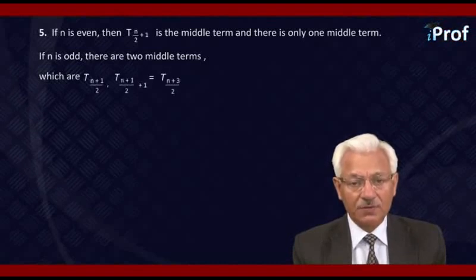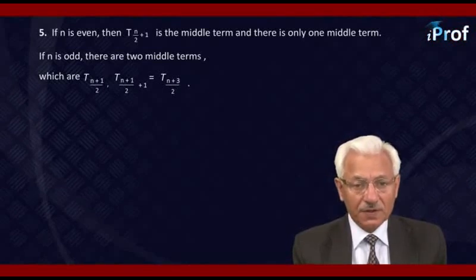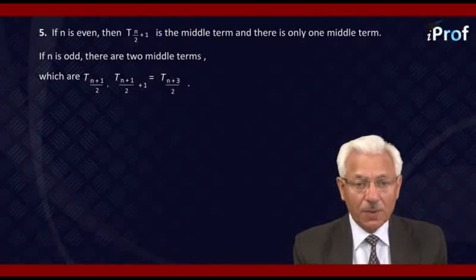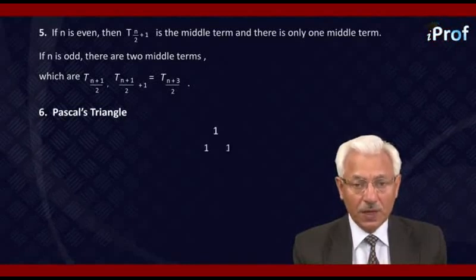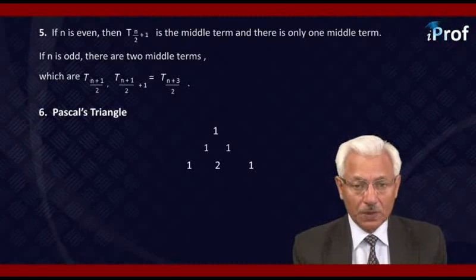So, a very interesting triangle formation of the binomial coefficients is given below. That is called Pascal's triangle. We have 1 in the first row, 1 and 1 in the second row, 1, 2, 1 in the third row, 1, 3, 3, 1 in the fourth row.